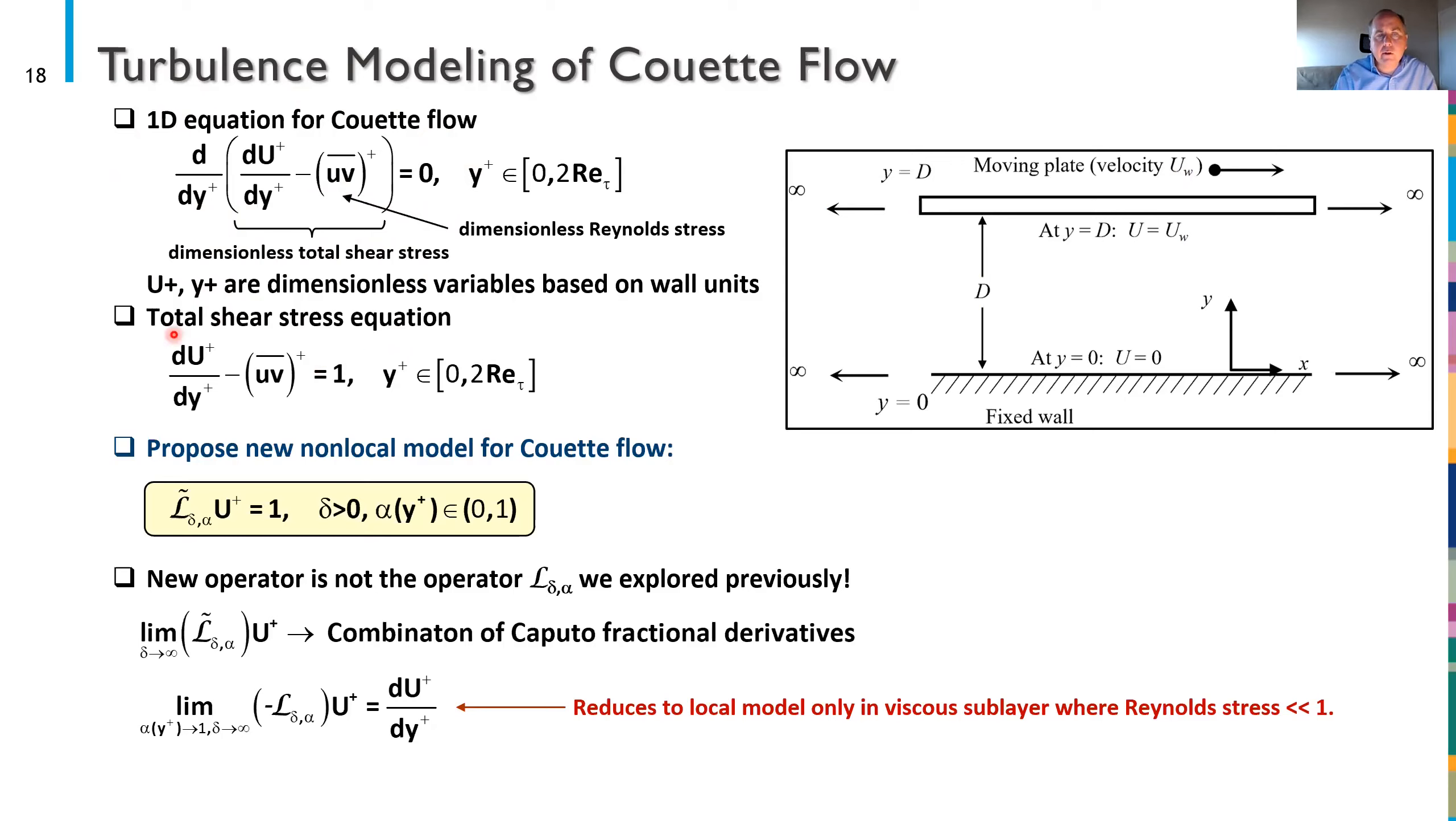So since the term in parentheses here is zero it must be a constant and you can in fact rewrite it here as our total shear stress equation. What we're going to do is propose a new non-local model for Couette flow that looks like this some operator L acting on u plus equals one. I'm not going to write down the form of the operator L here because it's a little tedious but I'm instead just going to describe its limit behavior to you as I did before.